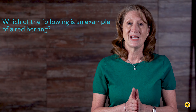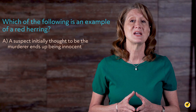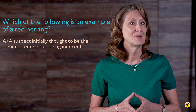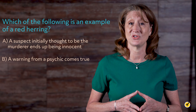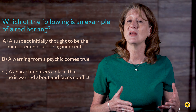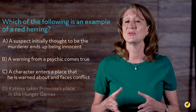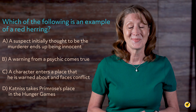Now, before we go, here's a review question to test your knowledge. Which of the following is an example of a red herring? A: A suspect initially thought to be the murderer ends up being innocent. B: A warning from a psychic comes true. C: A character enters a place that he is warned about and faces conflict. Or D: Katniss takes Primrose's place in the Hunger Games. The correct answer is A. I hope this review was helpful. Thanks for watching and happy studying!